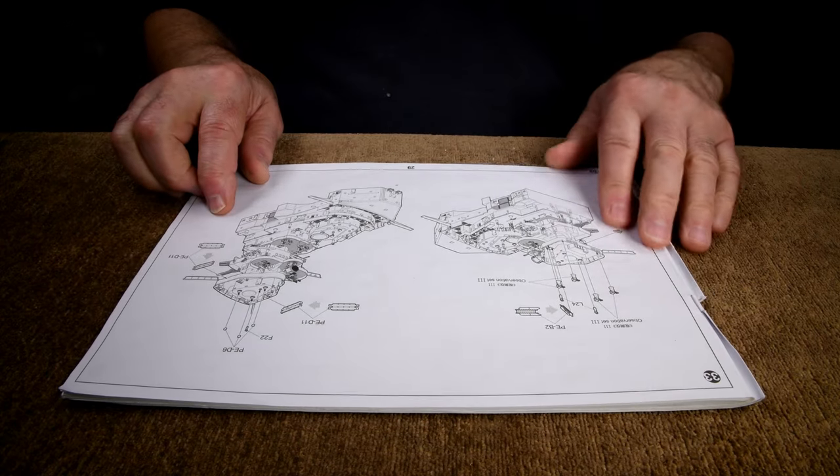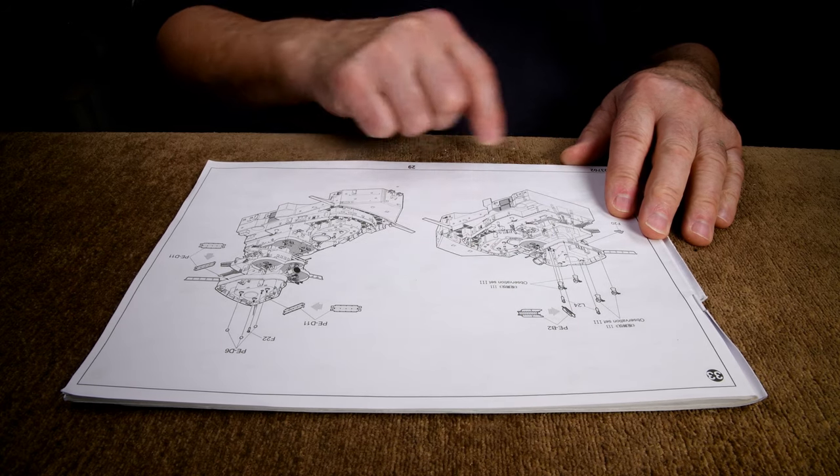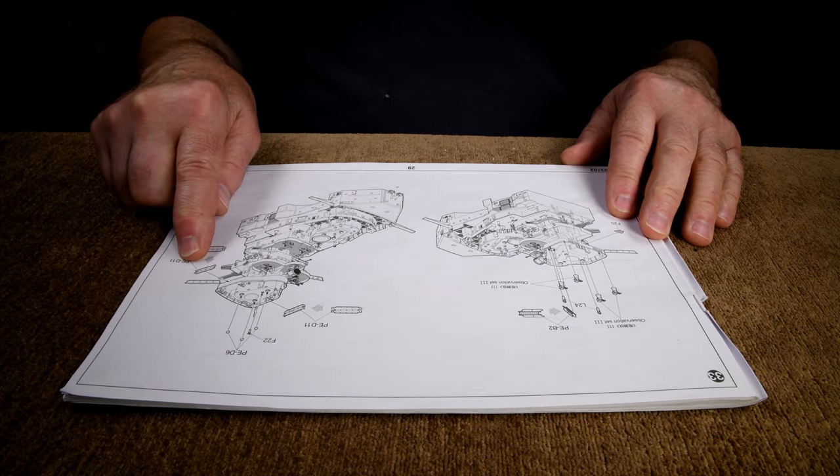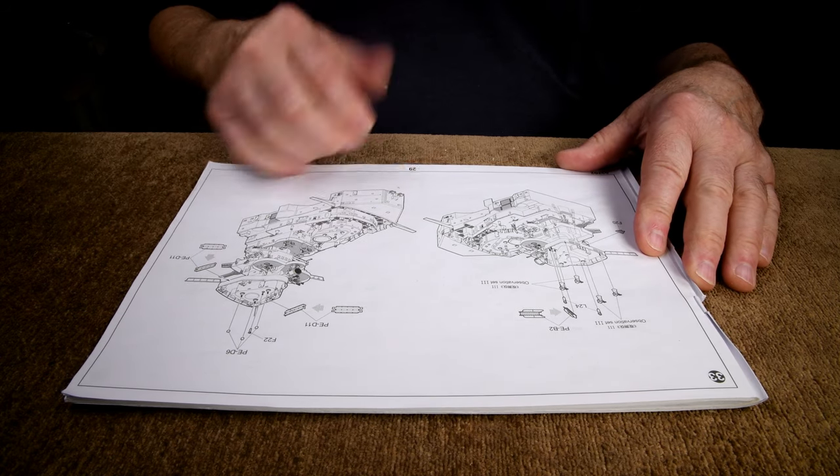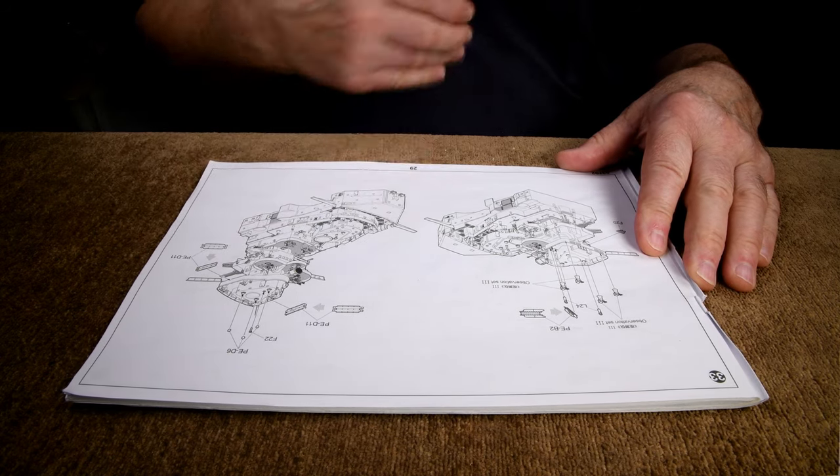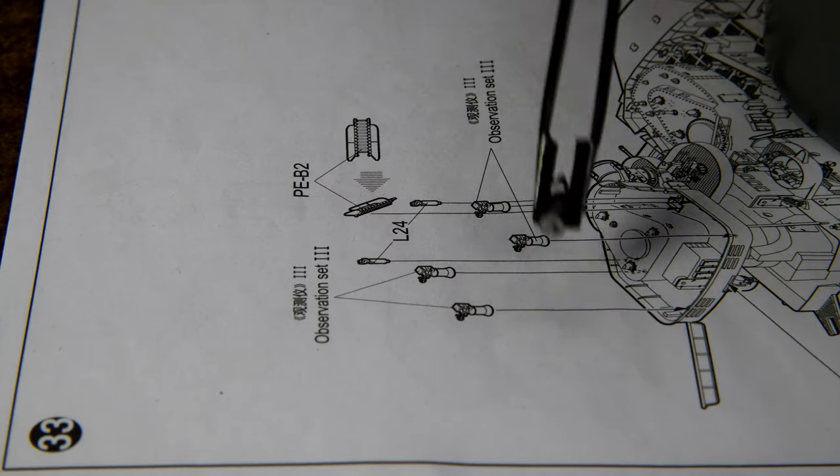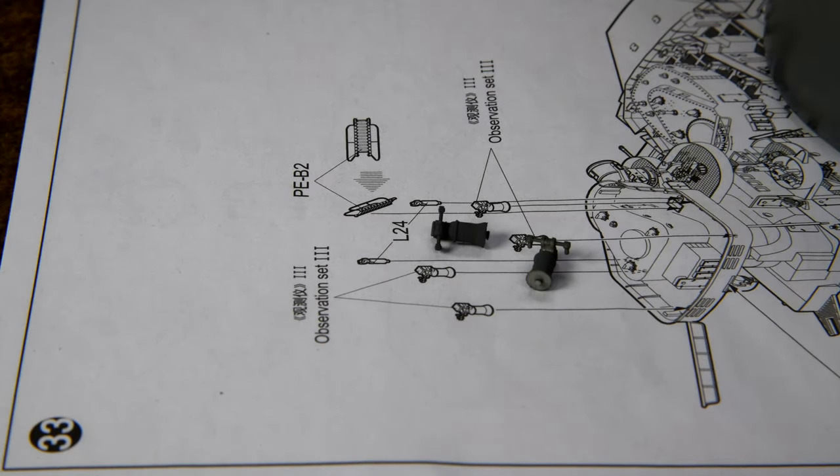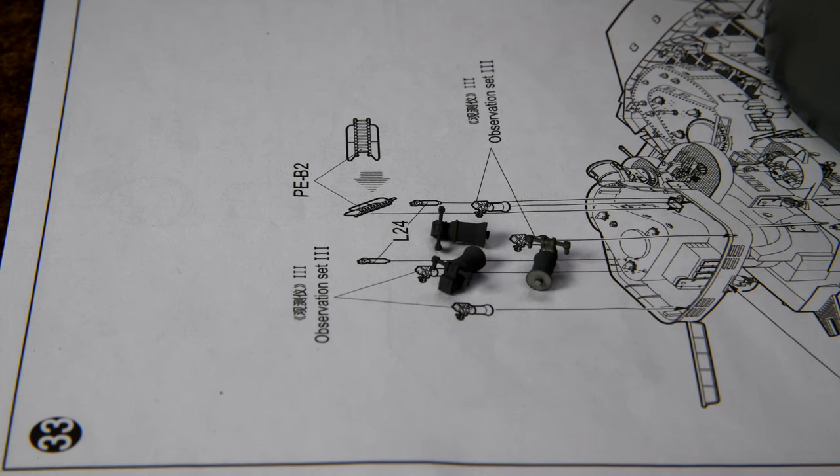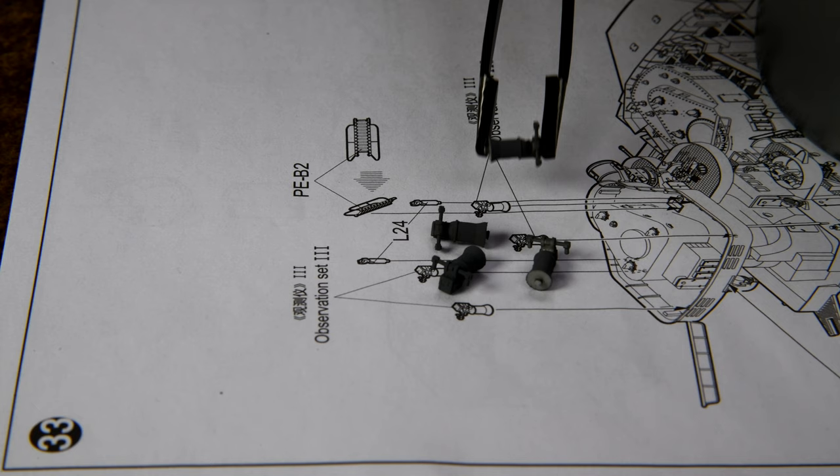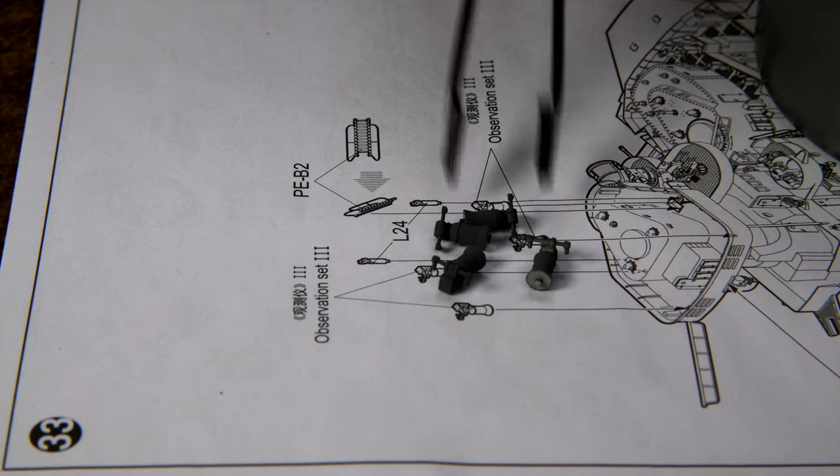Step 33. And there's photo etch, so we get to try out that new primer. Some of these pieces we've already got made up, like the observation set number 3. We need 4, then we've got 4.